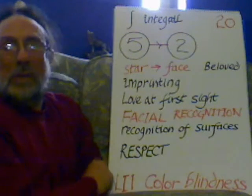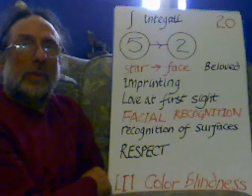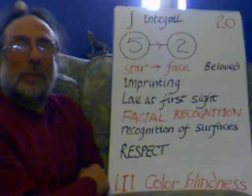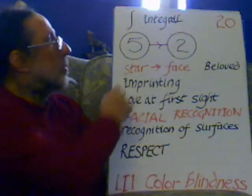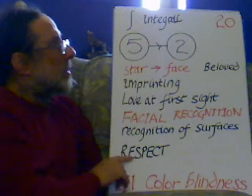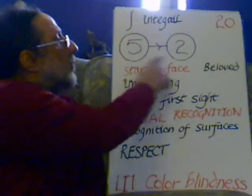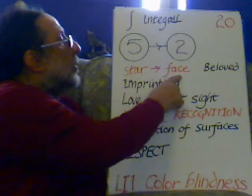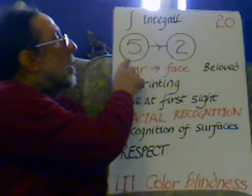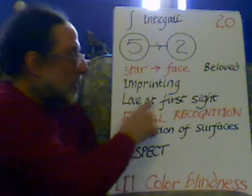Step 20. Now just as it was on steps 13 and 14 with a differential, so on step 20 we have the interval. Steps 19 and 20 is the interval — the 5 to the 2, the star to the face, which is the beloved, which is in printing.